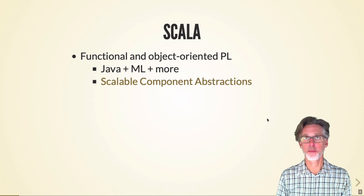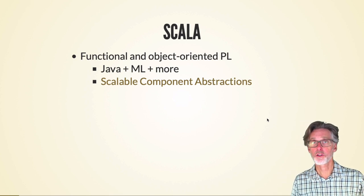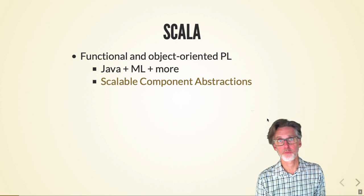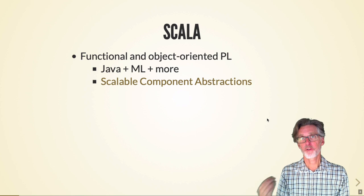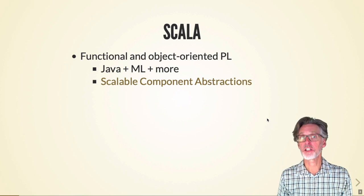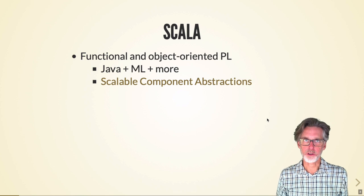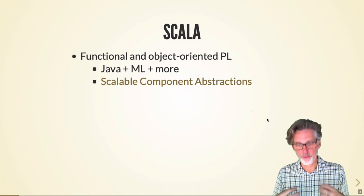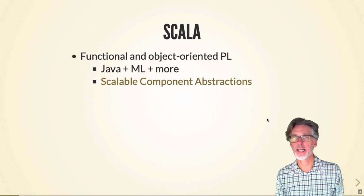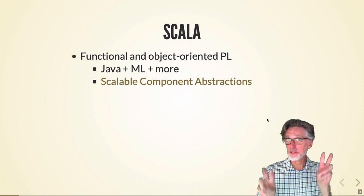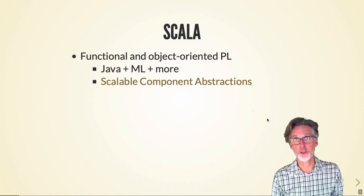Scala was designed as a multi-paradigm language that supports both functional and object-oriented programming. Its historical roots come from Java and from functional languages like ML. It was originally designed to be a scalable language which allows libraries to extend the language in non-trivial ways by adding new built-in types, new control structures, and other interesting goodies.